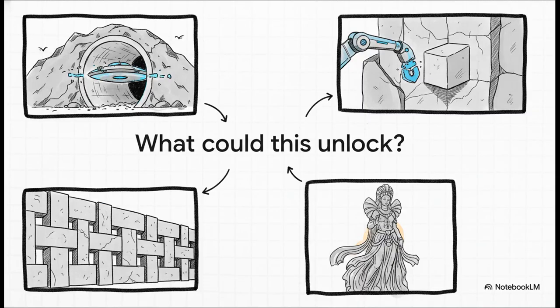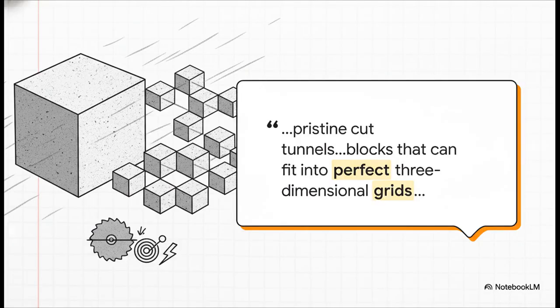So what could you actually do with this? What does this new world look like? You could tunnel through mountains at unbelievable speeds. You could quarry massive blocks of granite with the precision of a 3D printer. The patent even talks about creating perfectly flush, interlocking stone blocks that fit together so perfectly you wouldn't even need mortar. Imagine what artists could do, carving statues with a level of detail that seems completely impossible right now. There's a line from the patent itself that paints such an incredible picture: it talks about creating pristine cut tunnels, granite or andesite blocks, that can fit into perfect three-dimensional grids. Just think about that. Perfect grids made out of the hardest stone on the planet. That's the kind of transformation we're talking about.